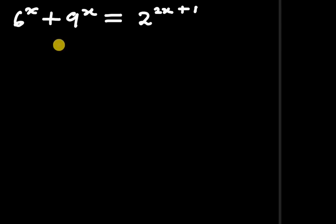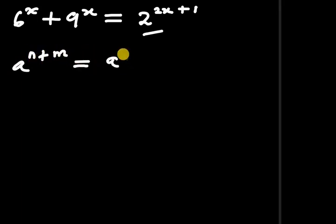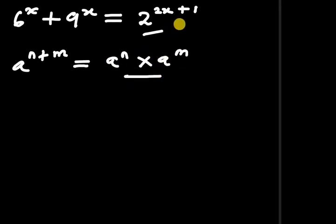Before I proceed, please subscribe to my YouTube channel and click on the notification icon for updates on my videos. Now, in order to solve this problem, we can concentrate on this identity: if you have a to the power of n plus n, it simply equals to a to the power of n times a to the power of n.